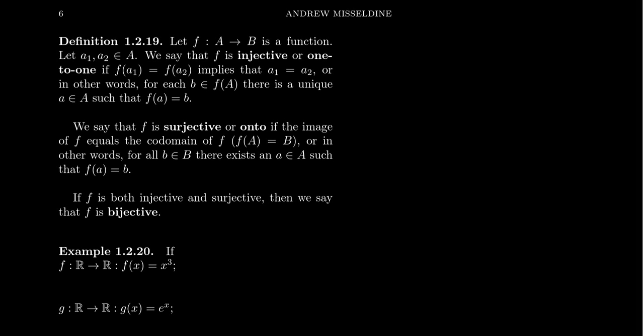We're going to talk some more about functions in this video, and particularly we want to talk about injective and surjective functions. When we first defined functions in a previous video, I made emphasis that the domain and codomain matter — that should actually be stated as part of the function itself and not left ambiguous as it often is done in the calculus setting. With function composition, we saw why that's an issue: in order for the composition to be well defined, the codomain and domain have to be compatible with each other — they should be equal. As we define injective and surjective, this idea of codomain and domain is going to be very much in the forefront.